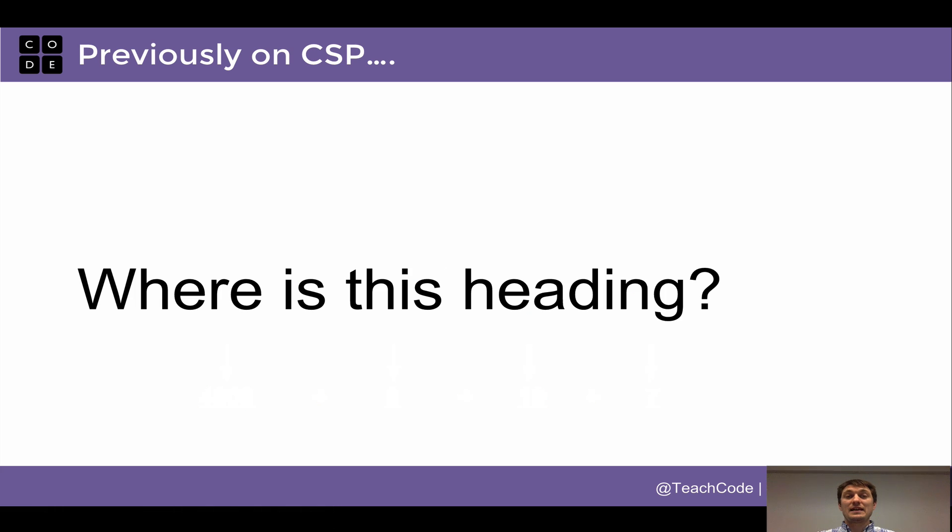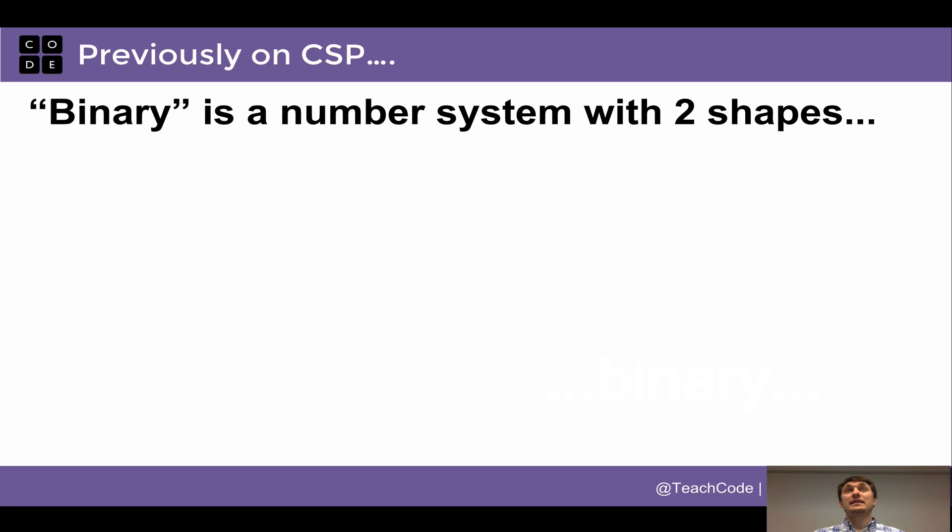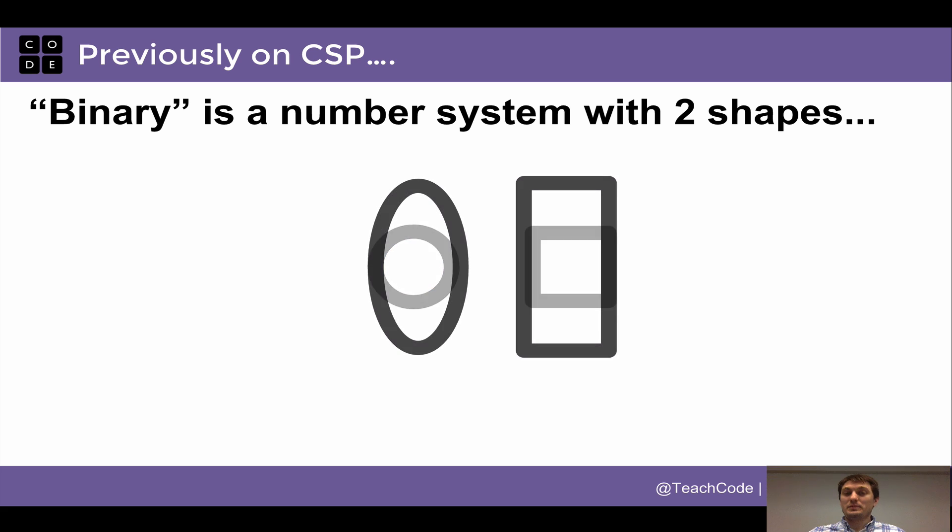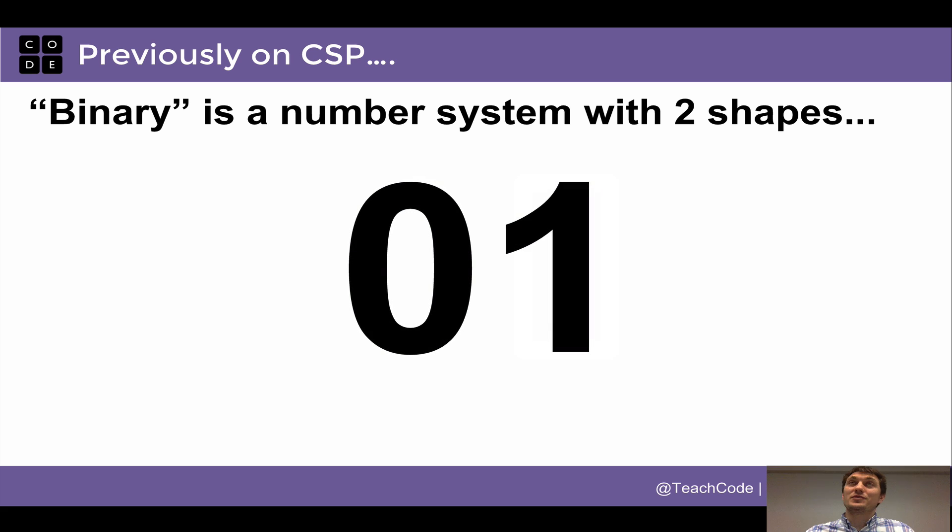So where is this heading? This is, of course, heading to binary. So binary is a number system that only has two shapes. So we could think of them as a circle and square, although I have a bit of animation here. That circle and square could very easily just be zero and one. And those are the digits that we typically use, but they are not necessarily the decimal numbers. They are just two shapes.